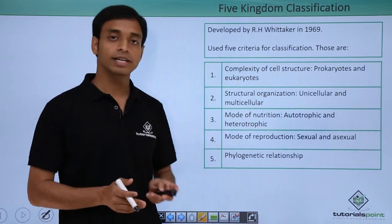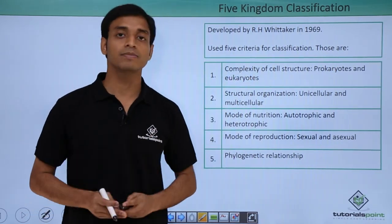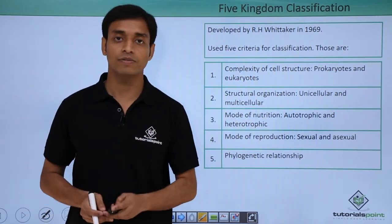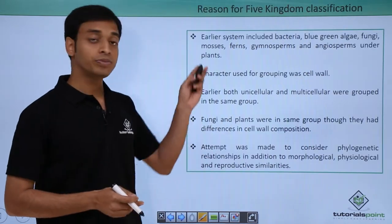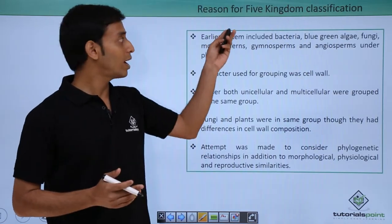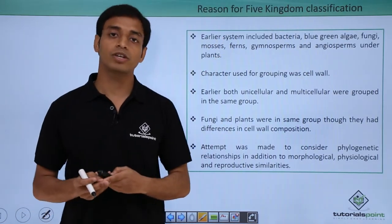The fifth criterion used was phylogenetic relationships, meaning the evolutionary relationships among organisms were also considered by Whittaker in his five kingdom system of classification.